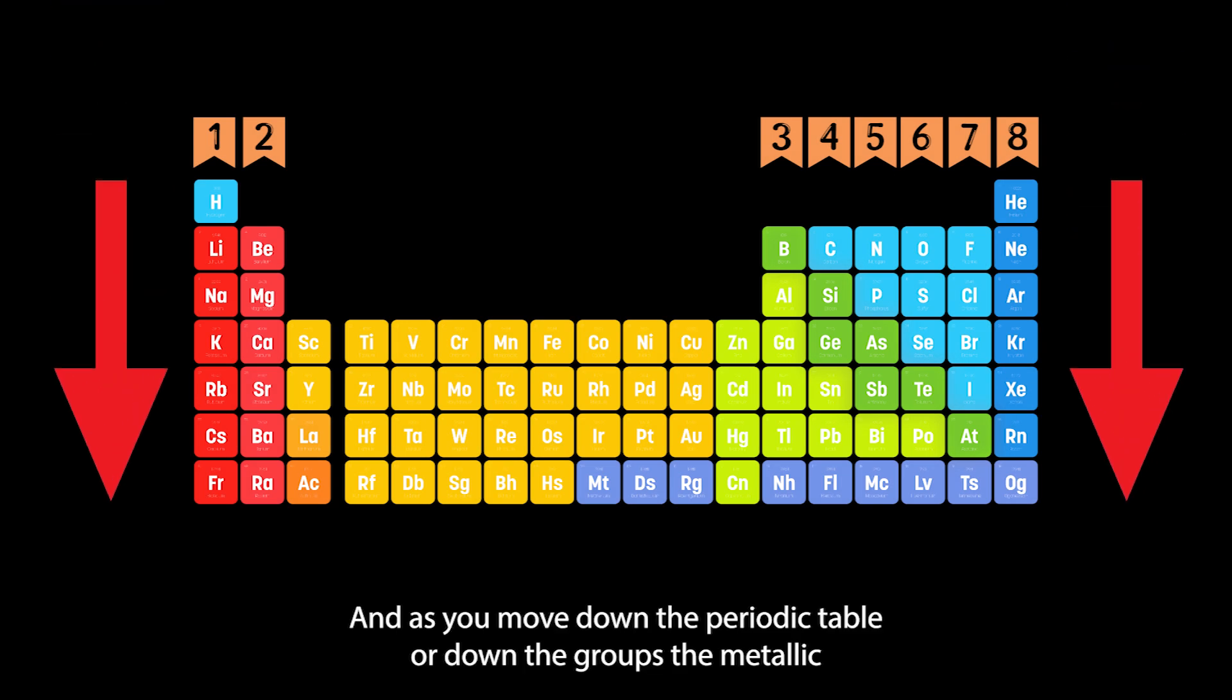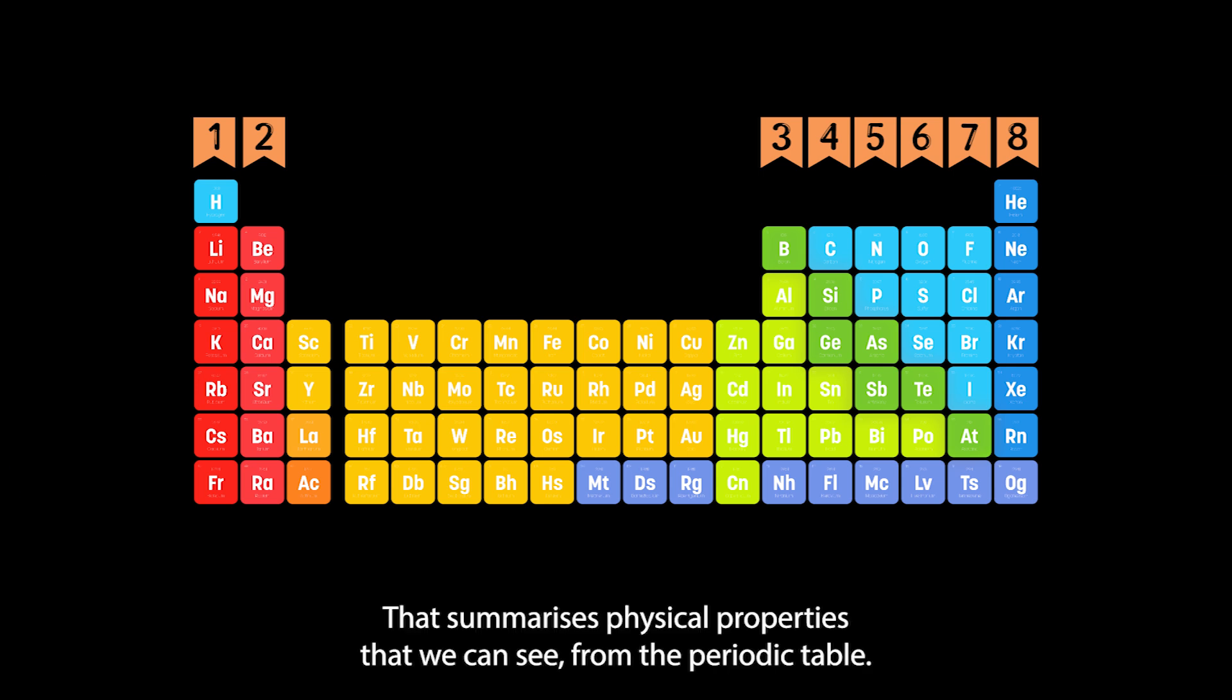As you move down the periodic table or down the groups, the metallic character of elements tends to increase. As you go this way and this way down, this bottom chemical will start to look more like a metal than this top one, and that's just because of the way the electrons are structured.